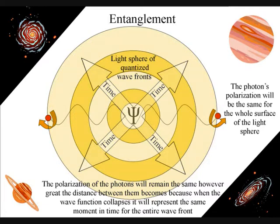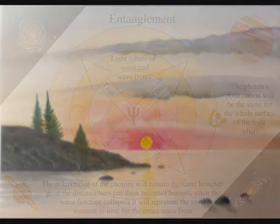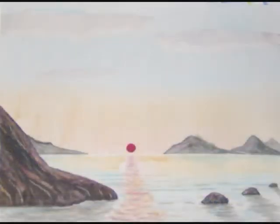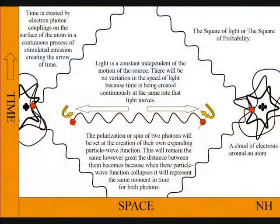Because each atom is creating its own spacetime at the same rate that light moves, the expansion of light between the atoms will always be a universal constant, independent of the motion of the source.